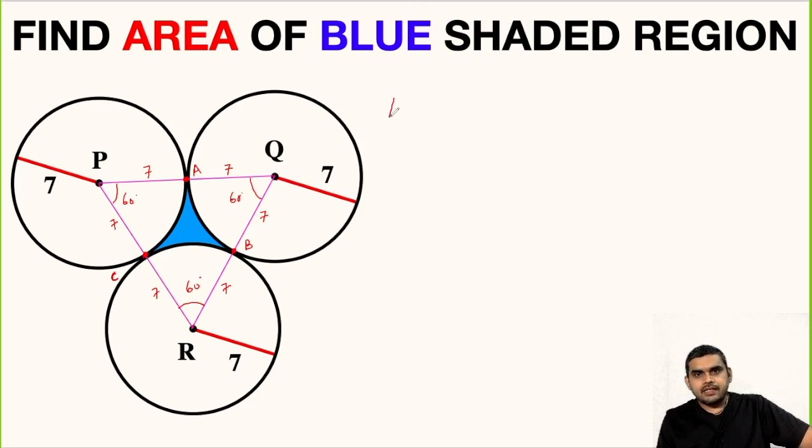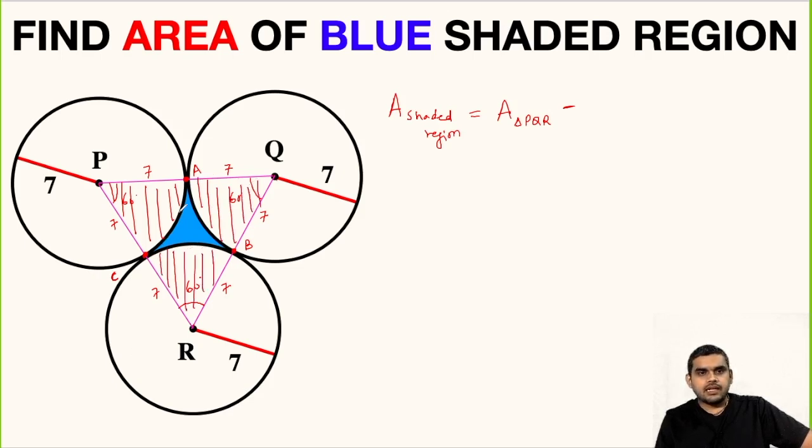So this is 60 degrees. Now, area of shaded region will be equal to area of this equilateral triangle P-Q-R—so area of triangle P-Q-R—minus area of these sectors. This is the first sector, this is the second sector, and this is the third sector.